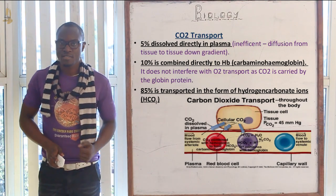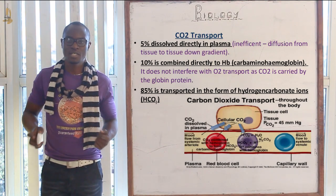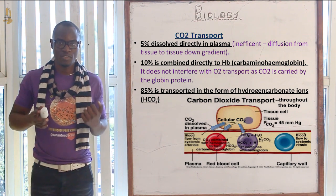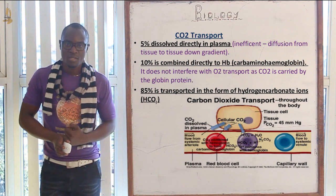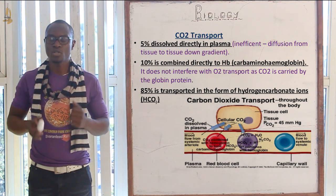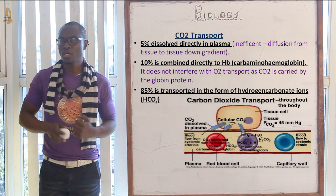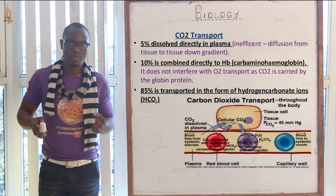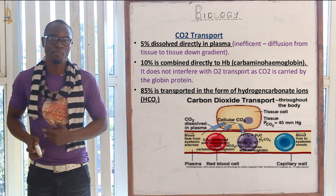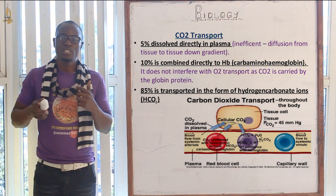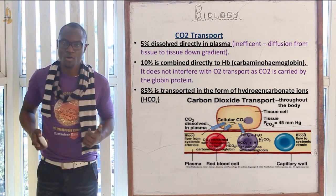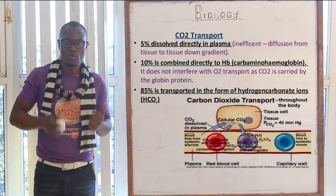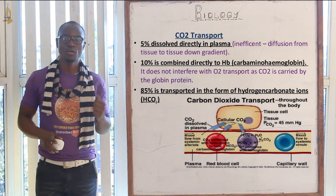Welcome to this class. We are going to discuss the transport of carbon dioxide in the blood. Carbon dioxide diffuses out of the cell into the tissue fluid, then into the bloodstream. About 85% of the carbon dioxide is transported inside the red blood cells. Only about 10% is transported as carbaminohaemoglobin, which is haemoglobin combined with carbon dioxide. About 5% is transported by plasma in the form of weak carbonic acid, H₂CO₃.